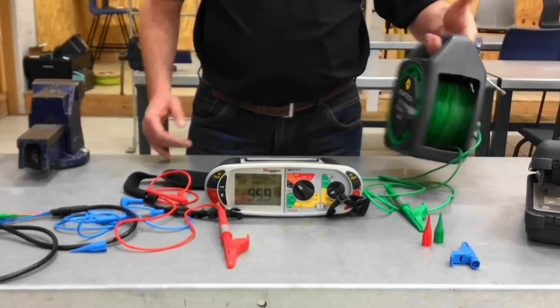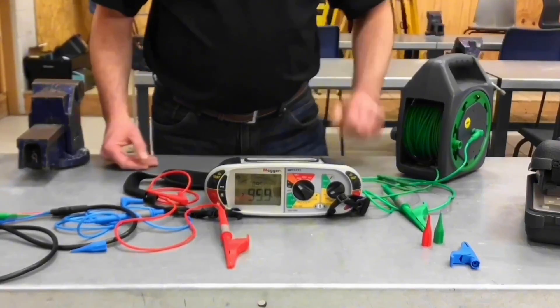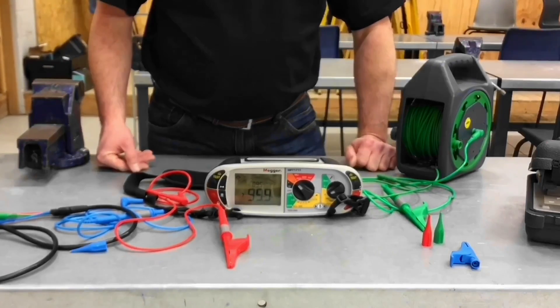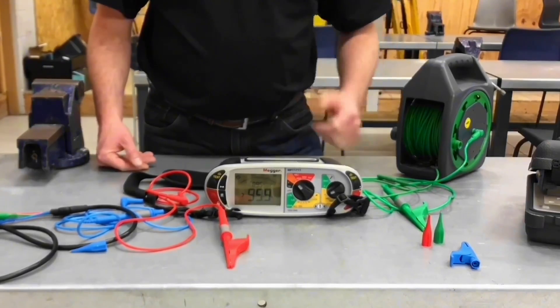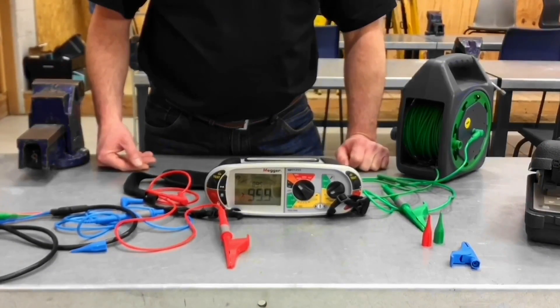Zero out would be if we were using a long wandering lead. It could be that we are testing the protective bonding conductor's continuity, or we're just doing an R2 test at different points in the circuit.